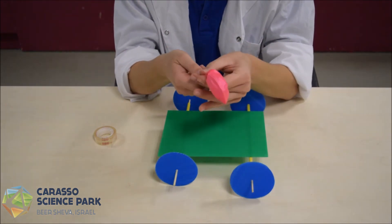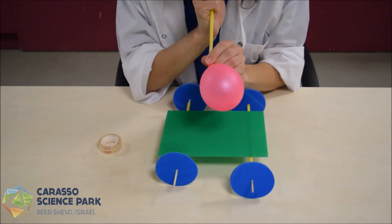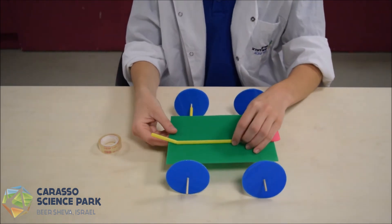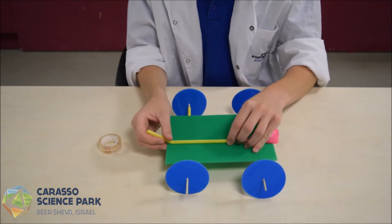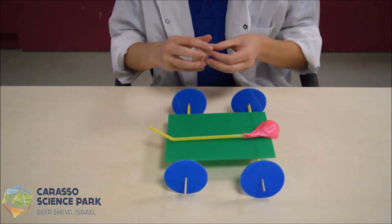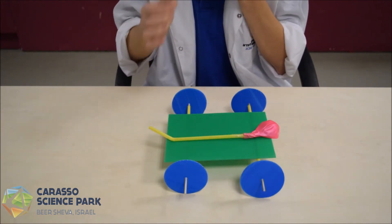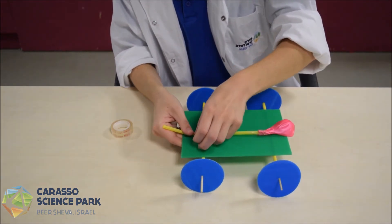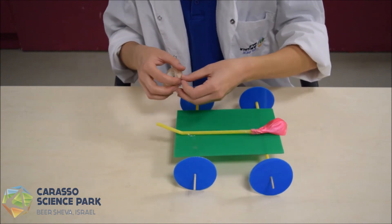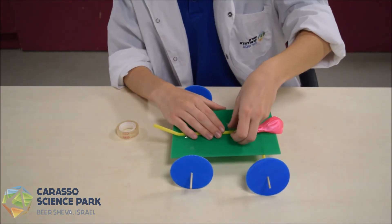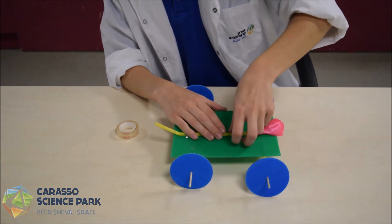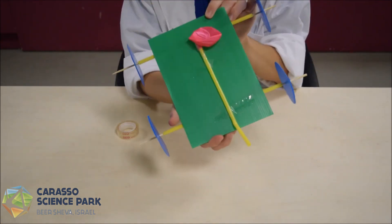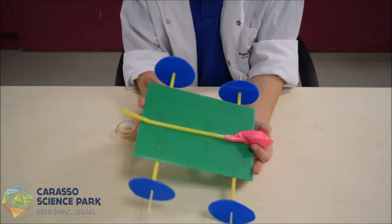We can make sure we have no holes by blowing into the balloon. All right. We'll attach the motor so we can blow easily into the straw. There we are. There's our car.